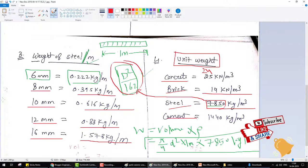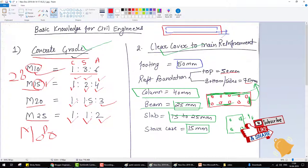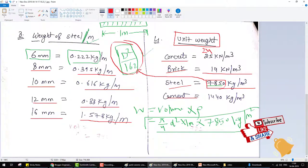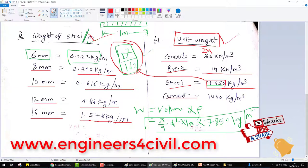Steel is 7850 kg per meter cube, and cement is 1440 kg per meter cube. So this is the basic knowledge of civil engineering: grade of concrete, clear cover, weight of steel, how to calculate weight of steel, and unit weight.